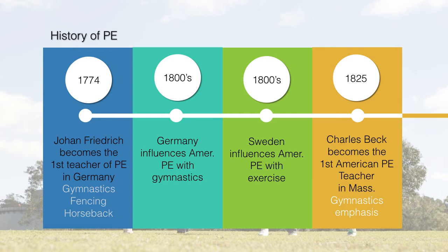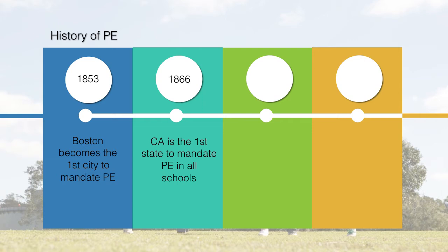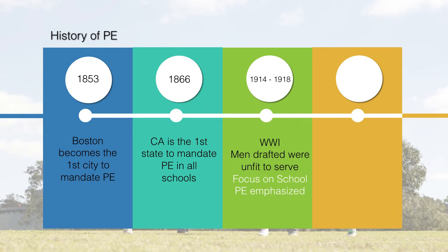Boston then became the first city to mandate physical education. It was incorporated into all public school instruction, and all students were expected to undergo a rigid gymnastics and calisthenics-type activity for full body improvement. A few years later, in about 1866, California realized physical education had importance and mandated it in all schools statewide. California became the first state — while Boston was the first city — to mandate physical education in public schools.